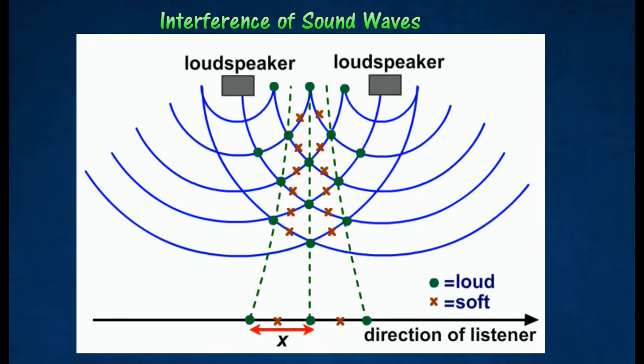Alternate loud and weak sounds detected by the listener indicate the occurrence of interference of sound waves. A loud sound corresponds to the occurrence of constructive interference. A weak sound corresponds to the occurrence of destructive interference.